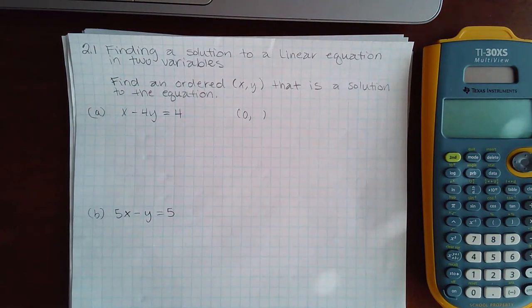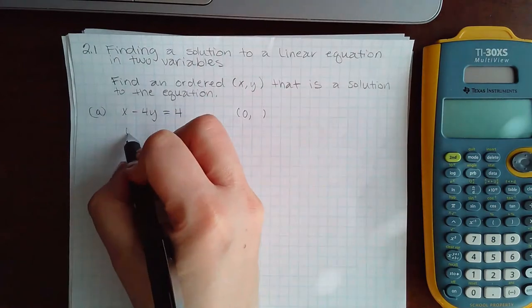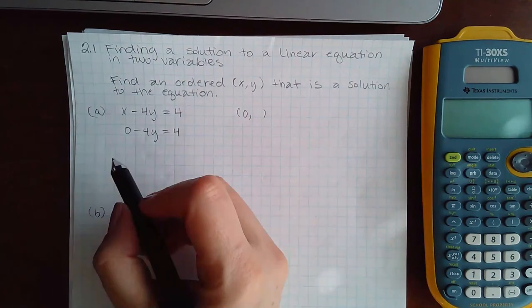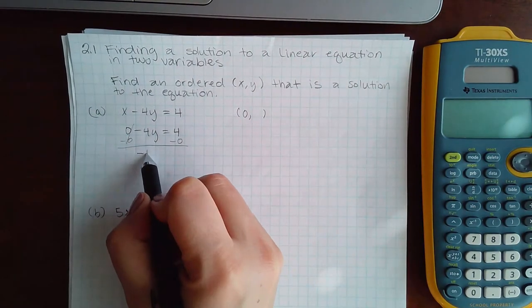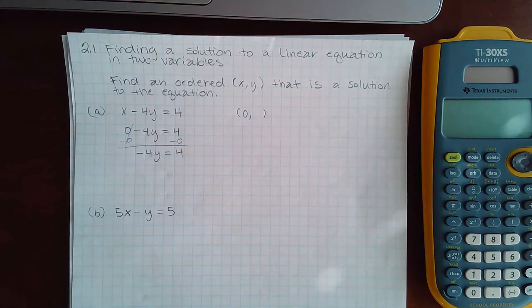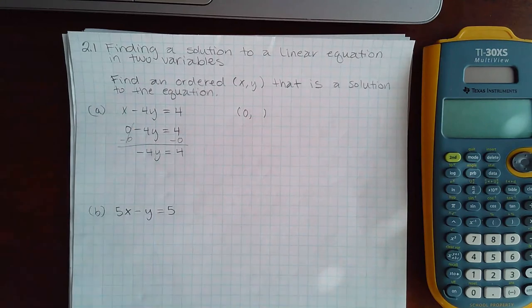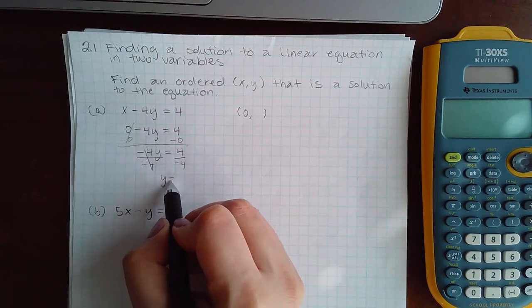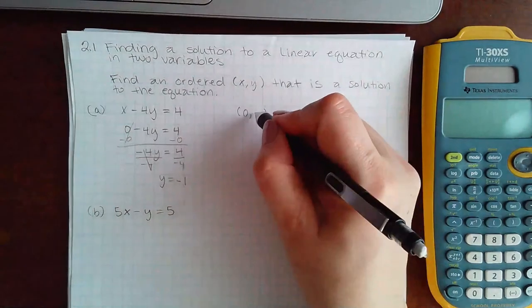What I'm going to do is plug in zero for x and then solve the resulting equation. You don't really need to minus zero because it's not even there to begin with. You still end up with the same equation. You end up having to divide by negative four, and then you end up with y equals negative one. That is going to be the y coordinate.